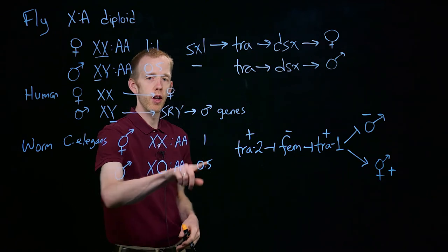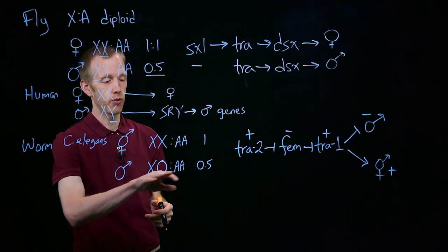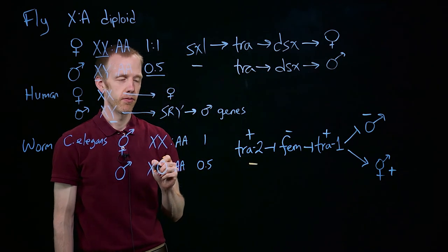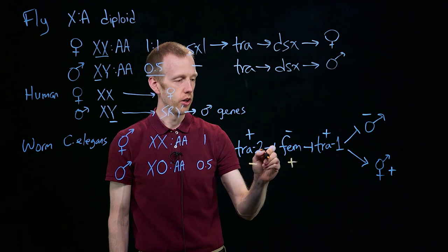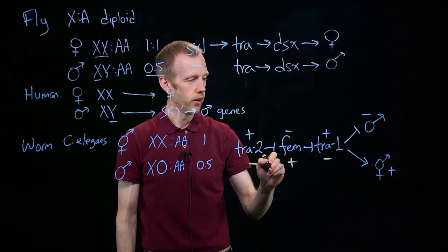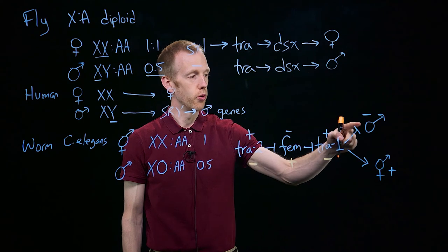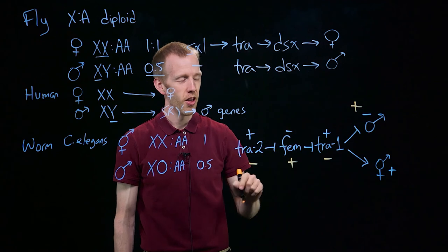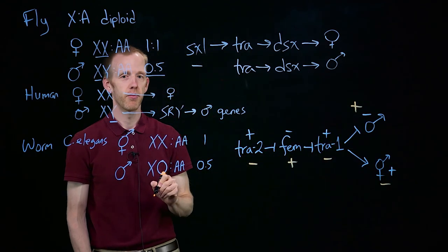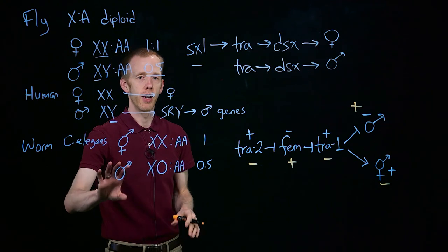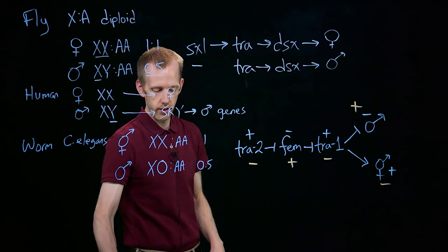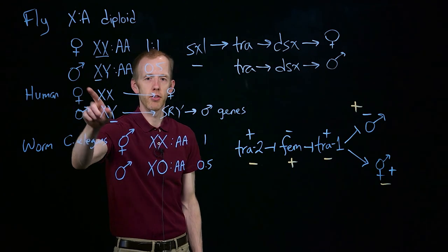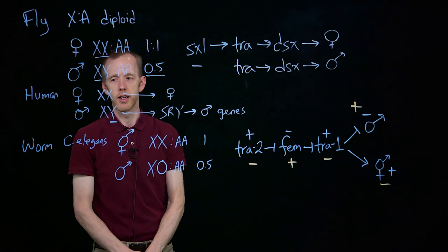When you only have half of an X chromosome per autosome, or one X for every diploid pair of autosomes, TRA-2 is inactive. And that means that the FEM genes are turned on. They turn off TRA-1. So TRA-1 is no longer able to repress male-specific genes, meaning they're turned on, and it's no longer able to turn on the hermaphrodite-specific genes, meaning they're off. And that's how males and hermaphrodites are genetically controlled in C. elegans, and in other species that are closely related as well. It's again, like Drosophila, the number of X chromosomes to autosomes that dictates that pattern.